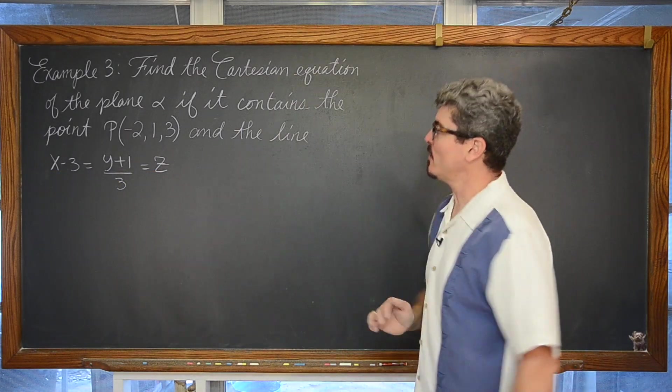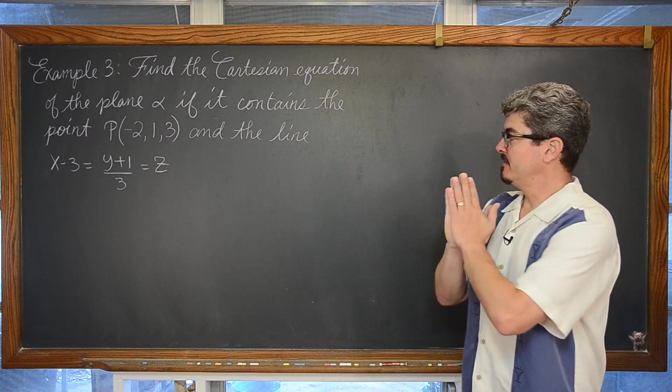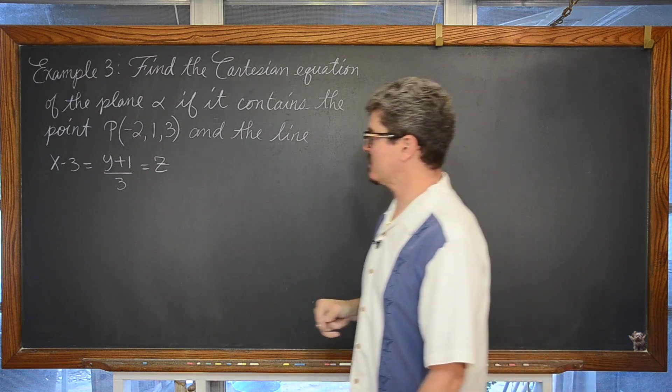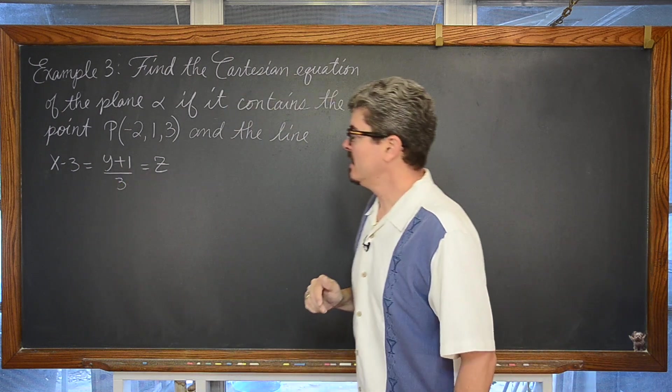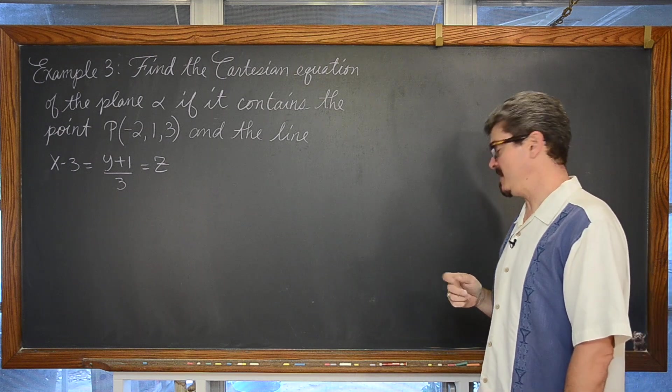We are going to find the Cartesian equation of the plane alpha if it contains the point P(-2,1,3) and the line which is given to us in Cartesian form of x-3 equals y plus 1 over 3 which is equal to z.